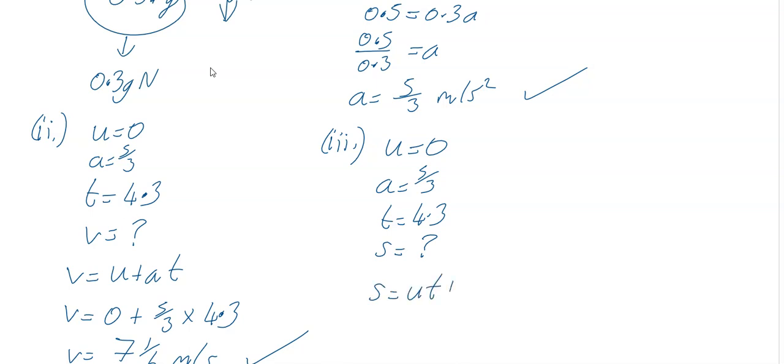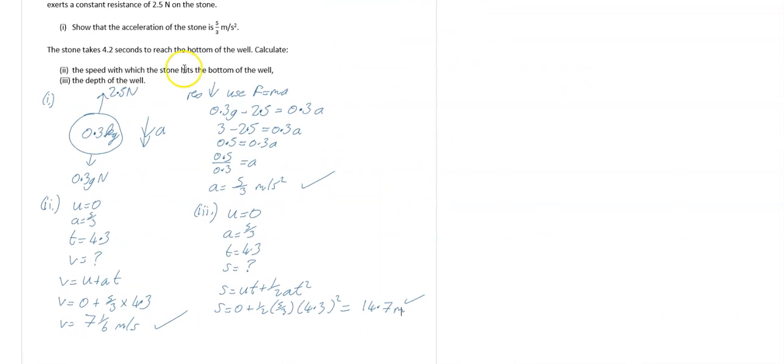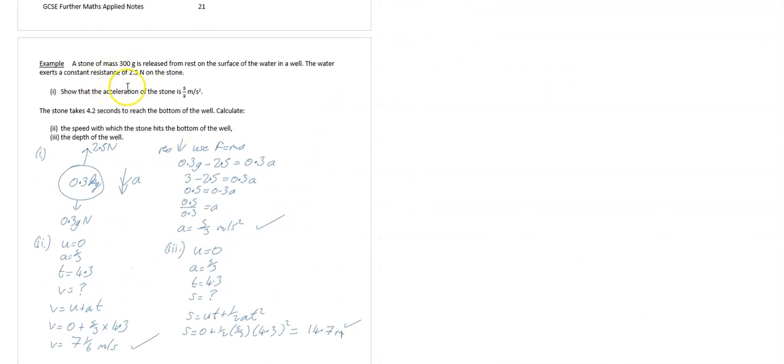So you can use S is equal to Ut plus a half A T squared. So your S is equal to zero, U times anything is going to be zero, plus a half times my A which is five over three times my T which is four point three squared. And I'm just going to work across the page and that's it all. That is the end of this video.